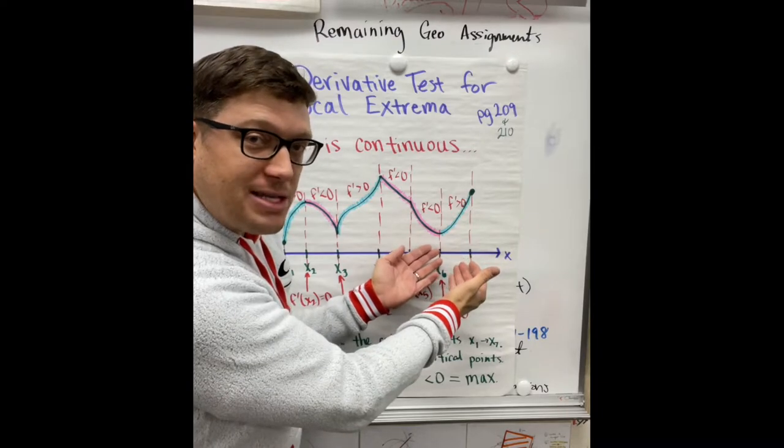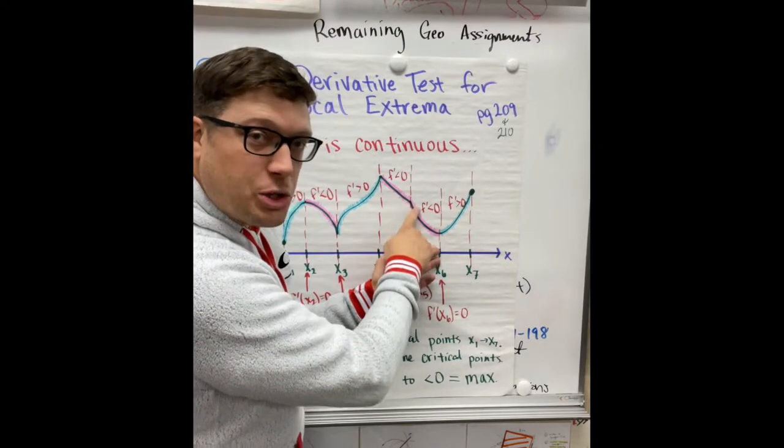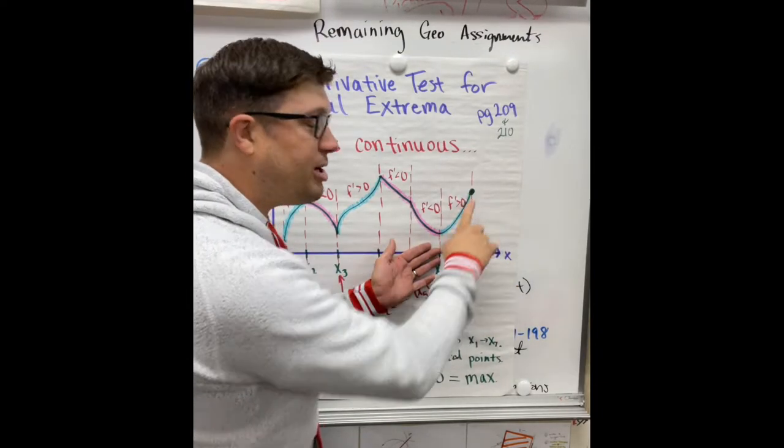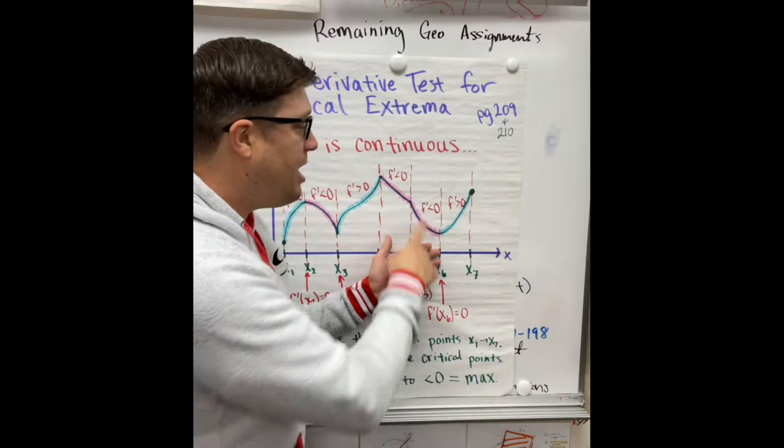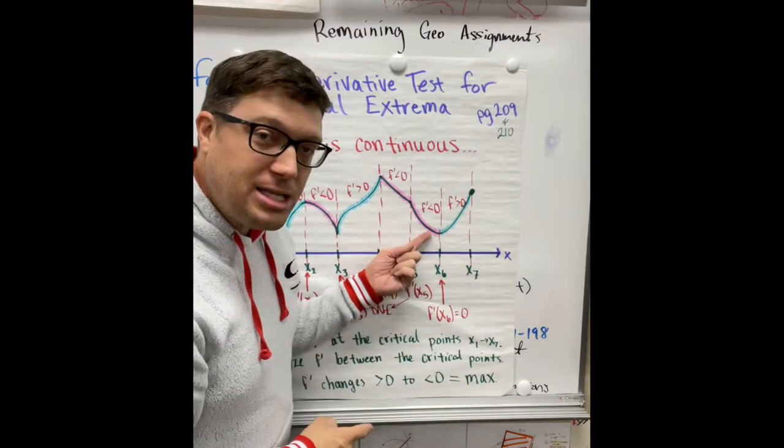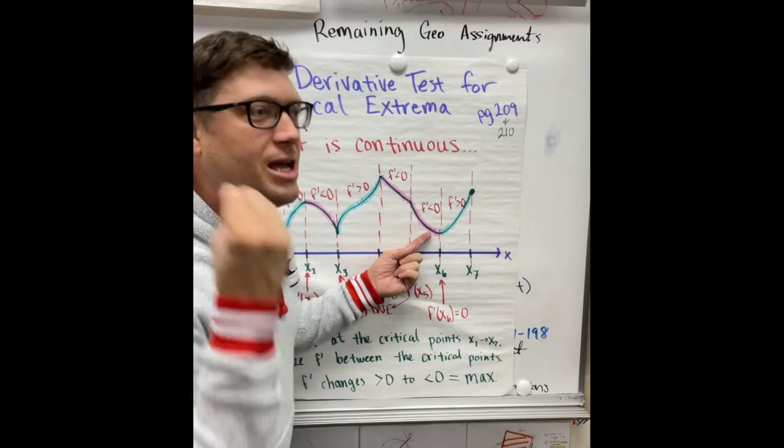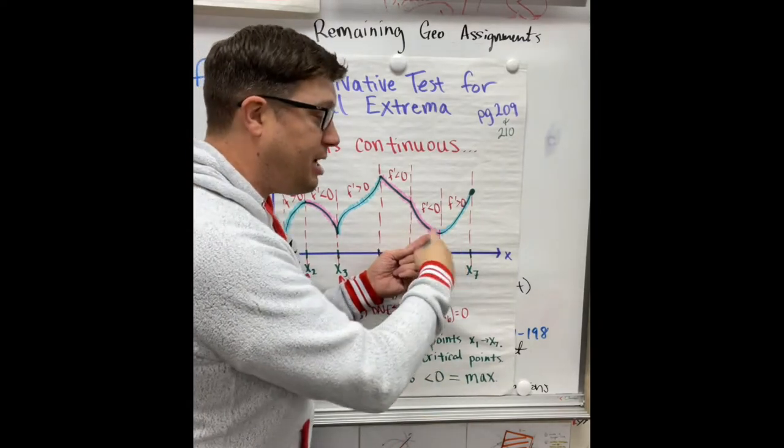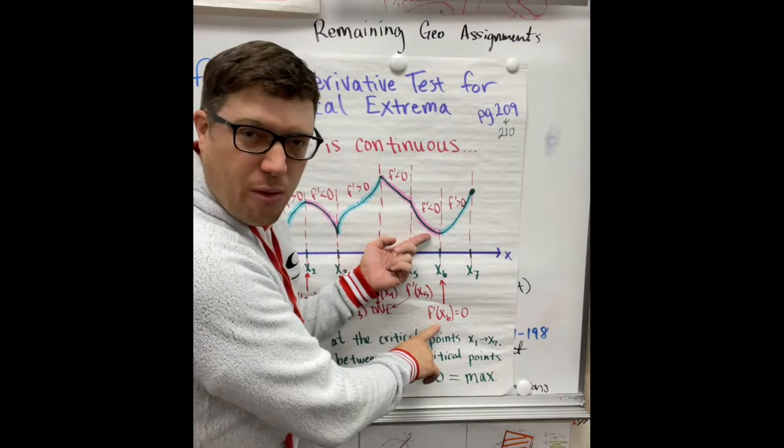Over here, we have the reverse of that situation. We have decreasing, so the derivative is negative, to increasing, which means the derivative is positive. And in that moment, at that spot, we have a critical point. It does exist. This is continuous and smooth. So therefore, the derivative does exist. It's zero.